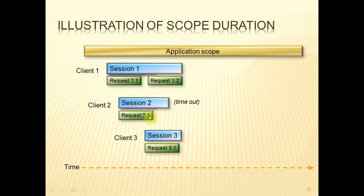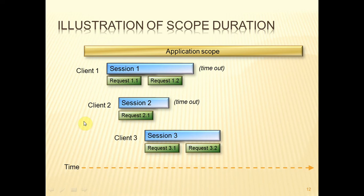Just a little bit after Client Three sent in a request, Client One also sent in Request 1.2, and that has prolonged the life of Session One because the timeout counter is reset. Then Request 2 comes in from Client Three, so Session Three continues. But now Session One has timed out because there has been no further request.